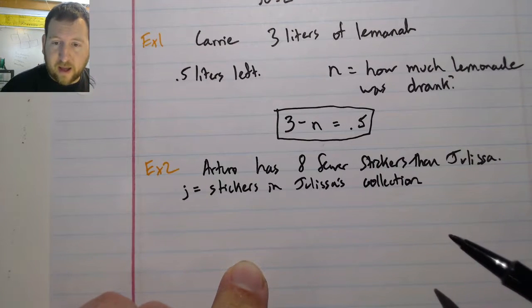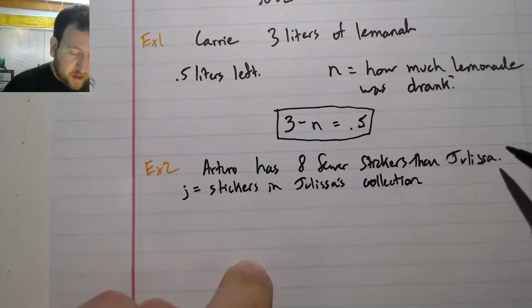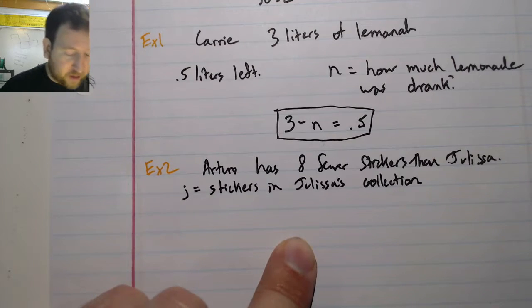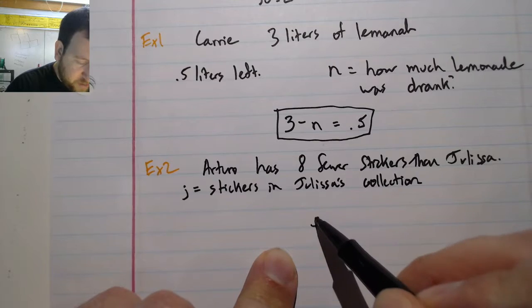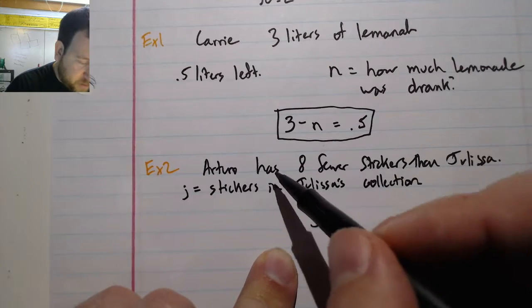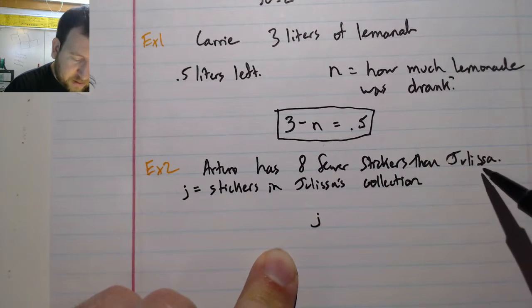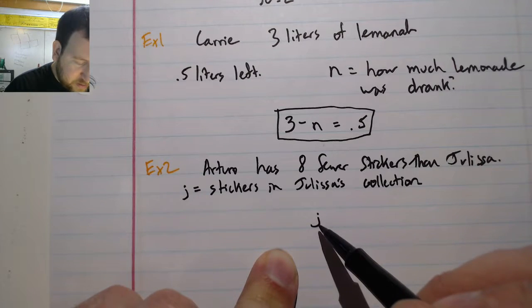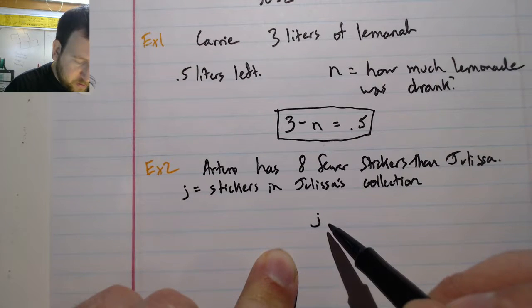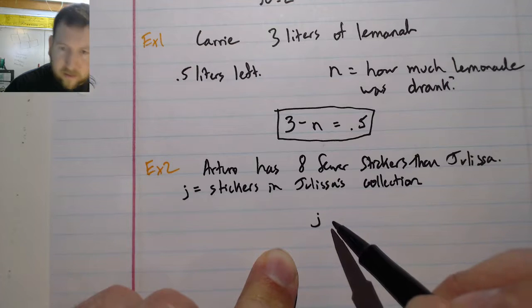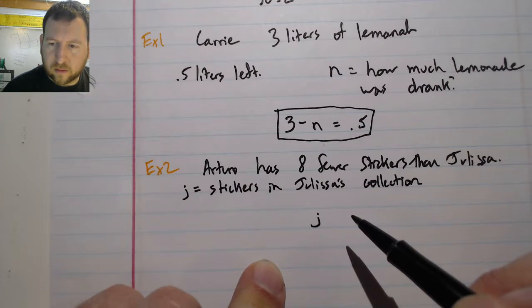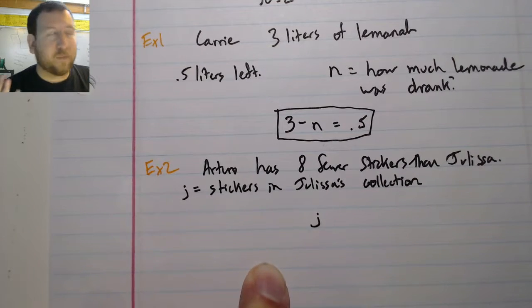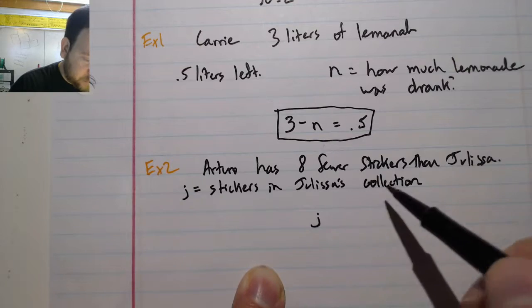Write an equation that we would be able to solve for J. Okay, Arturo has 8 fewer stickers than Julissa. Julissa is J, is the number of stickers in Julissa's collection. For this one we're actually going to be writing an expression. So I can't, I won't be able to solve it because I don't have enough information. So I could say J, which I know. And I have 8 fewer. Arturo has 8 fewer stickers than Julissa. Julissa has J stickers. So J is, oh, and we're going to write the number that are in Arturo's collection.